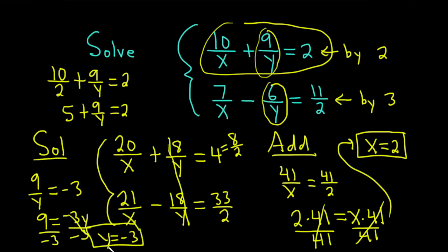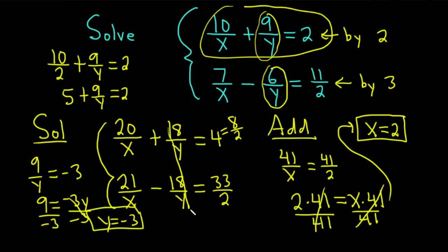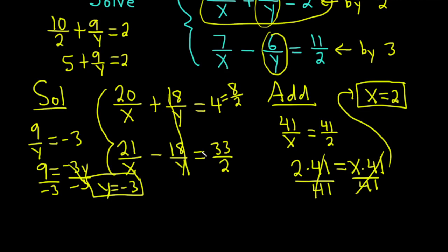We have x equals 2 and y equals negative 3. And that's the answer. If you wanted to write it as an ordered pair, which is probably better, it would be 2 comma negative 3. And that would be the solution to the system of equations. I hope this video has been helpful. Good luck.